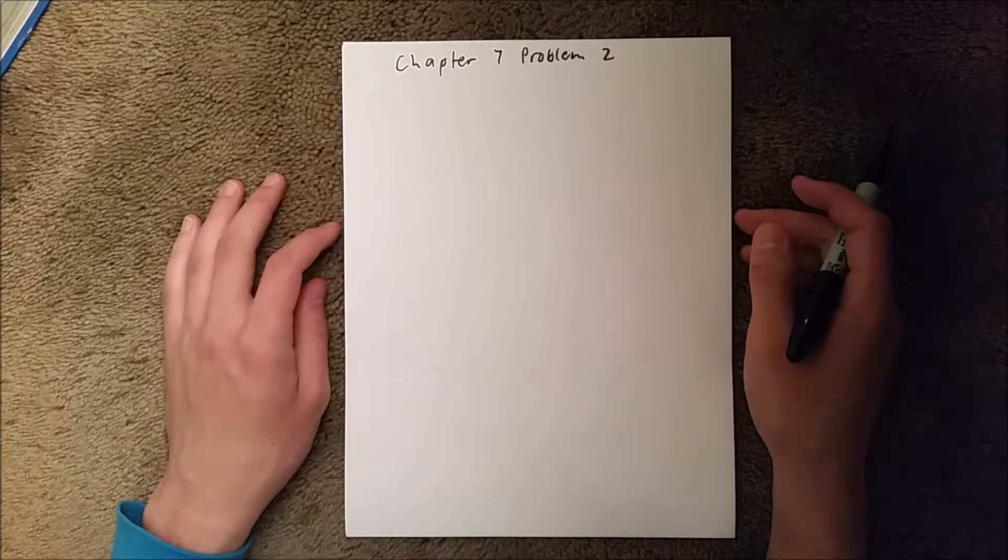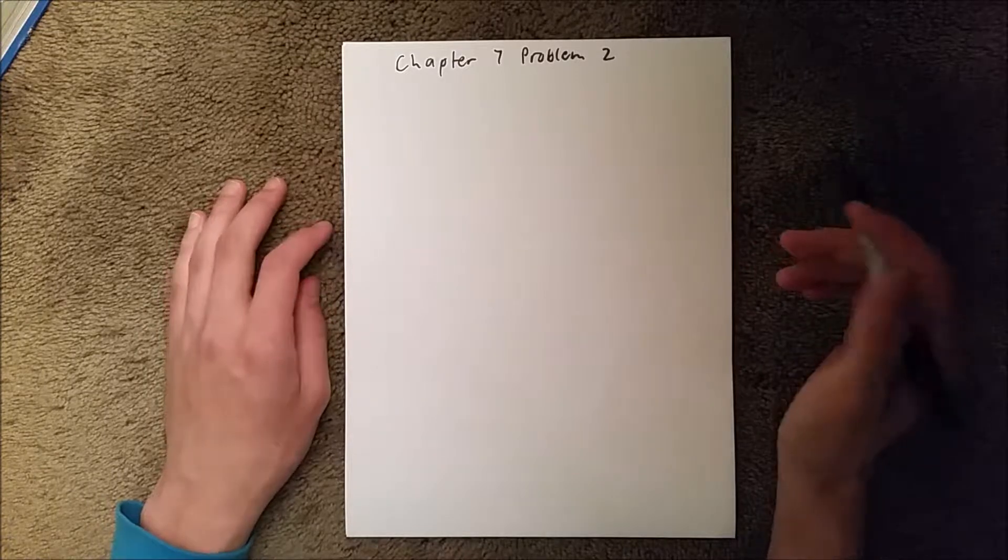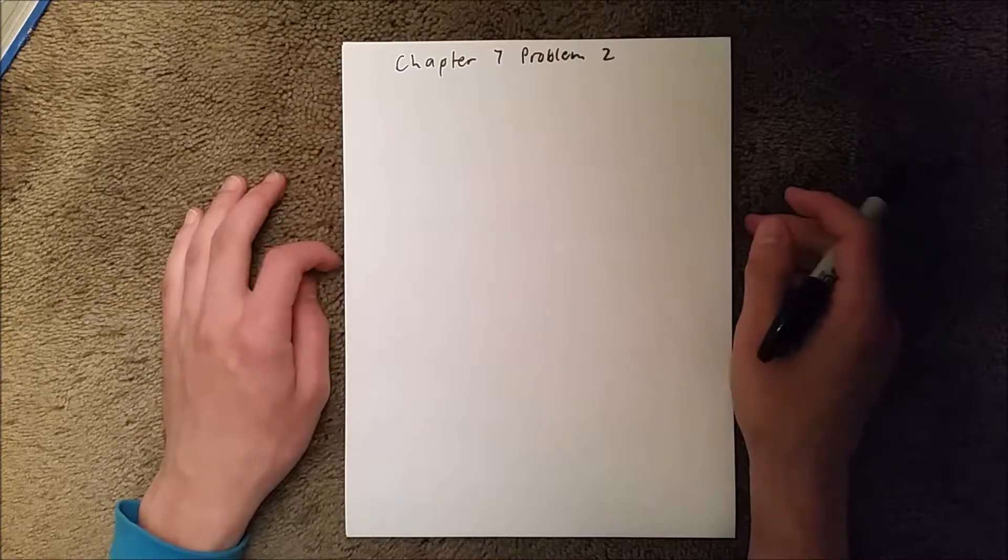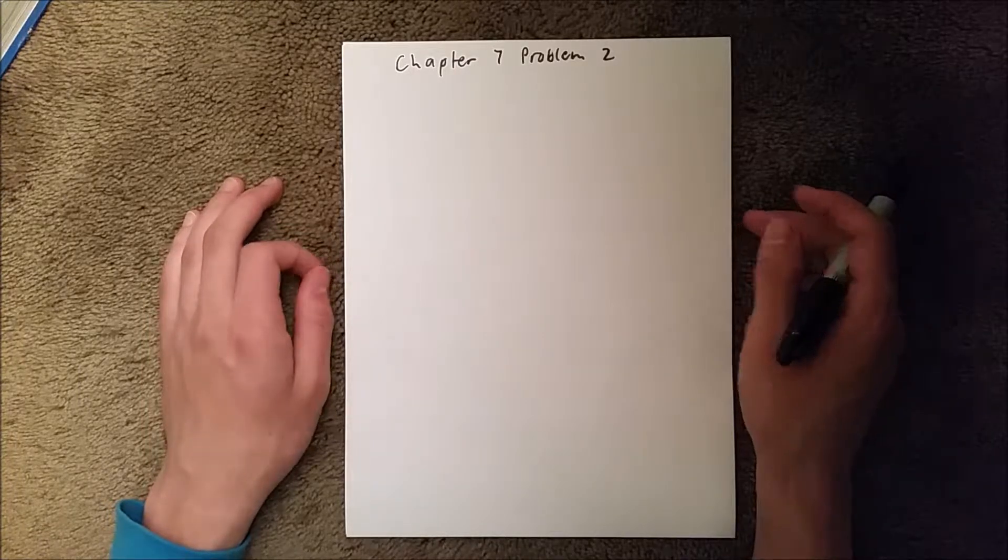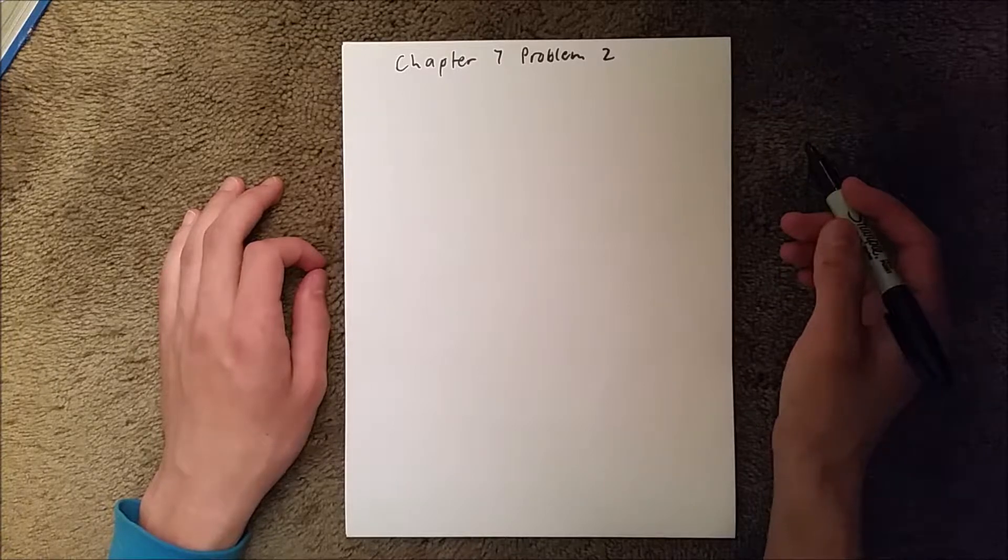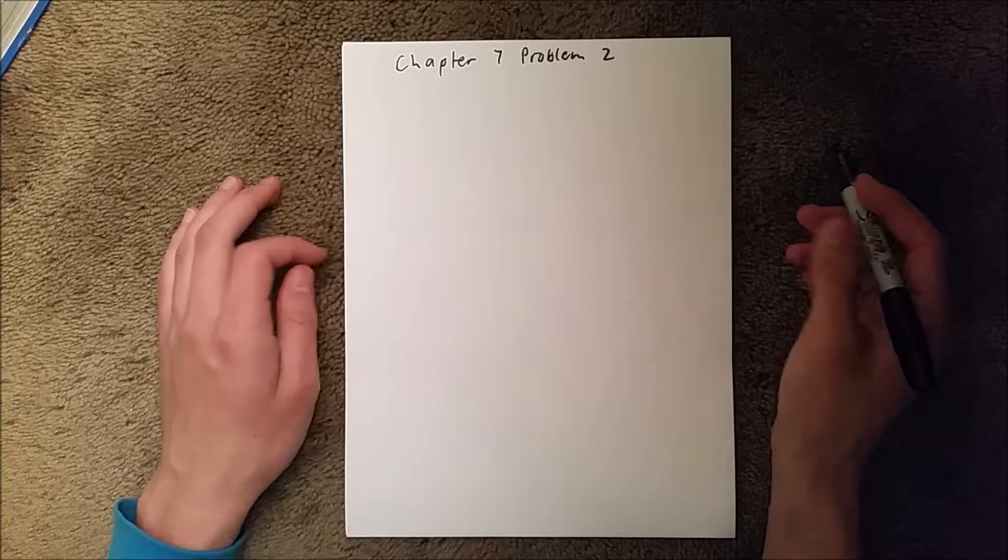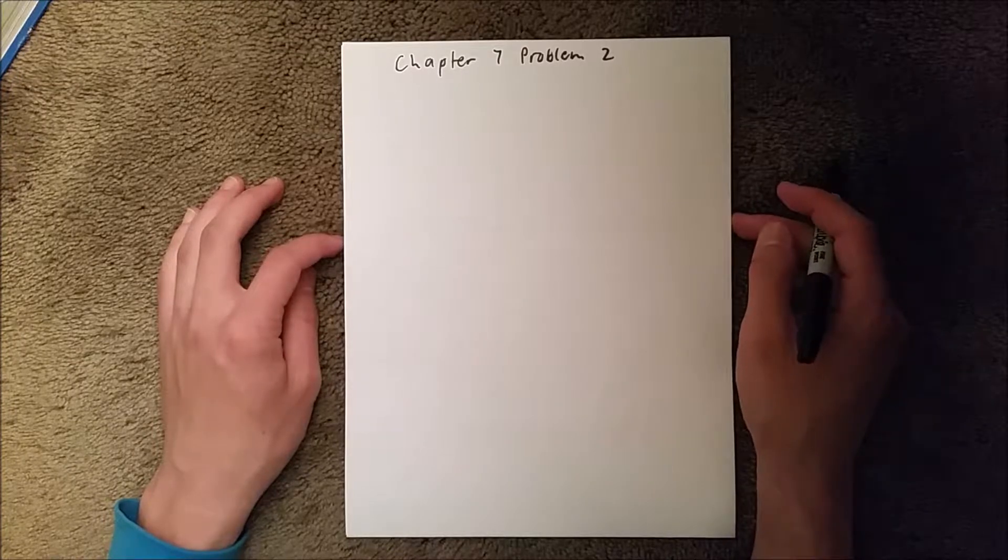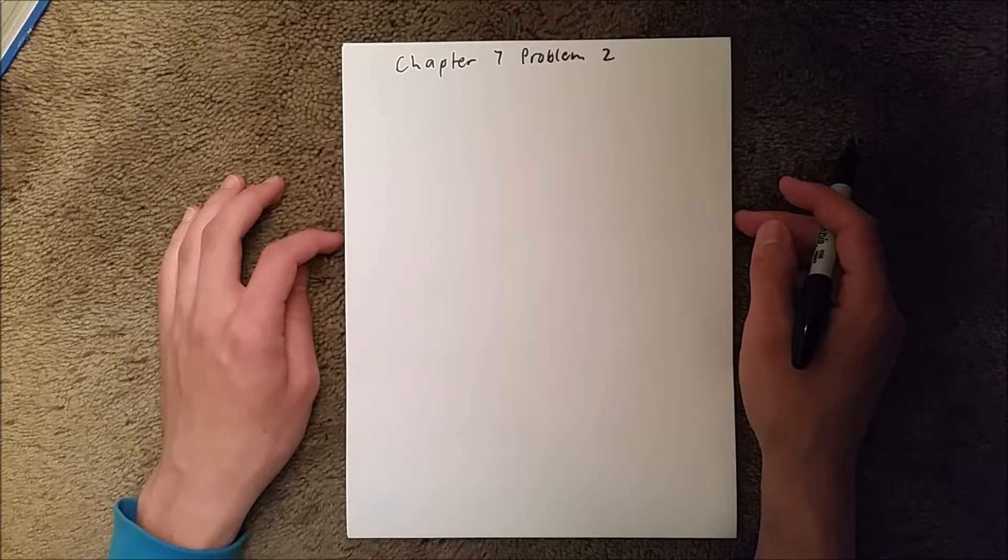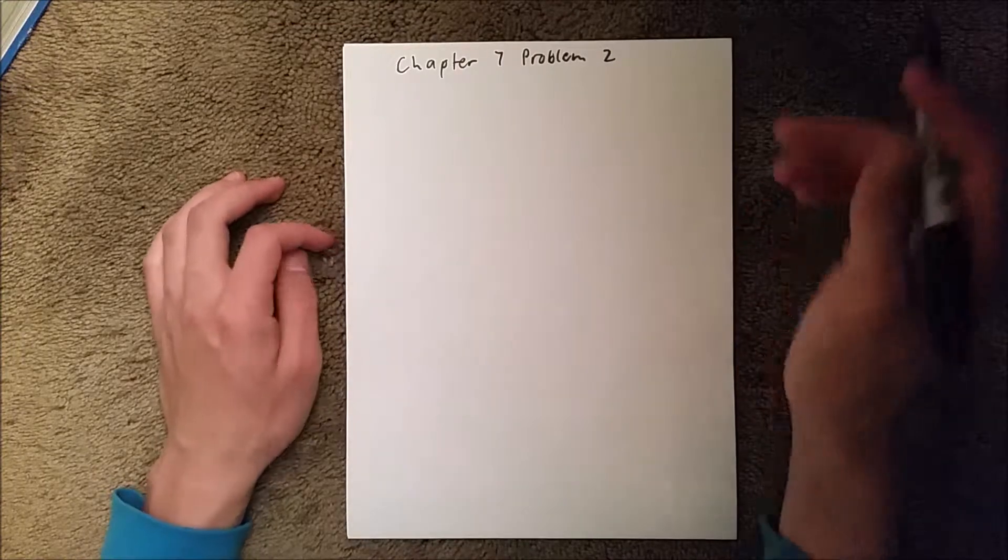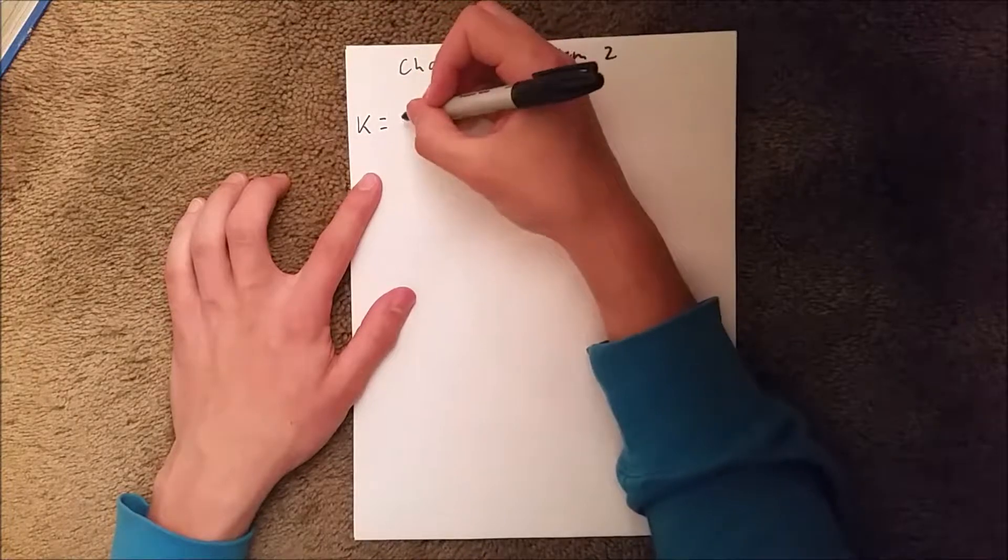This textbook is by Halliday, Resnick, and Walker. This problem is about a spacecraft. We're given the mass and its speed, and we're asked to find what kinetic energy it would have. So we know that kinetic energy is equal to one half mv squared.